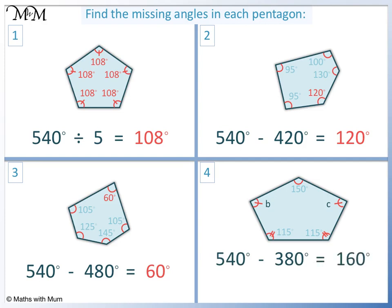540 minus 380 equals 160. Because B and C are the same, we will divide 160 by 2, which equals 80. So B and C are both 80 degrees.